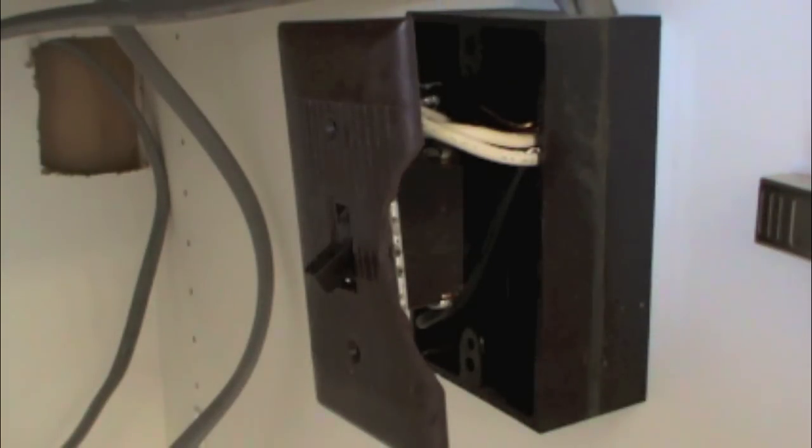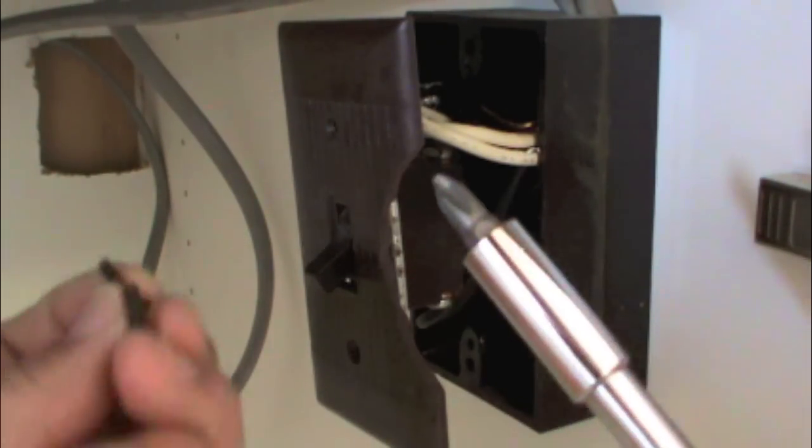The first thing you should always do is turn off the power at the circuit breaker. Alright, now once you've turned off the circuit breaker, take your screwdriver and remove the face plate.